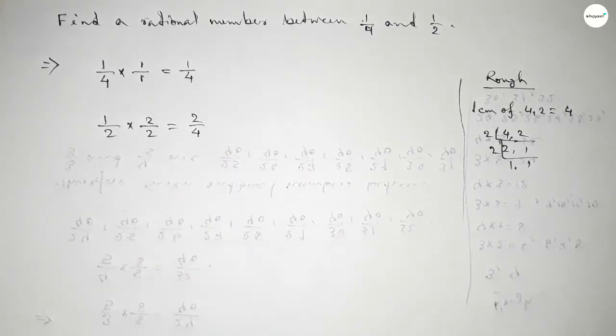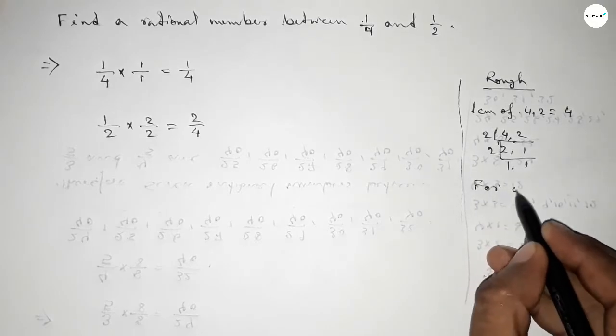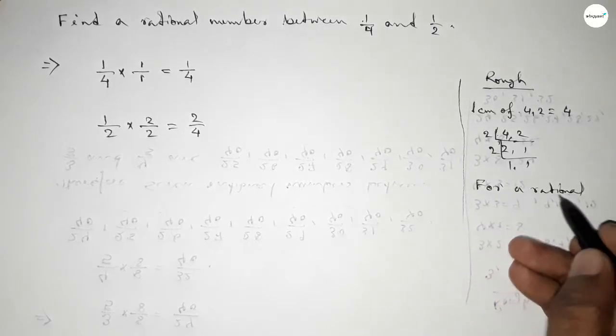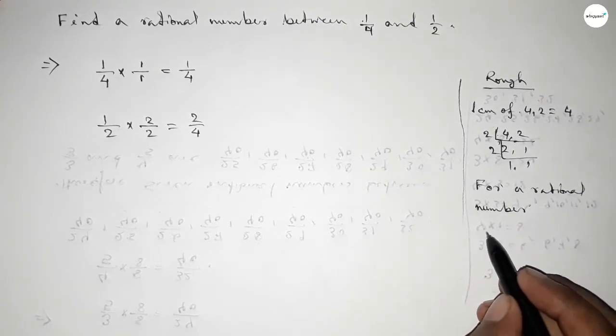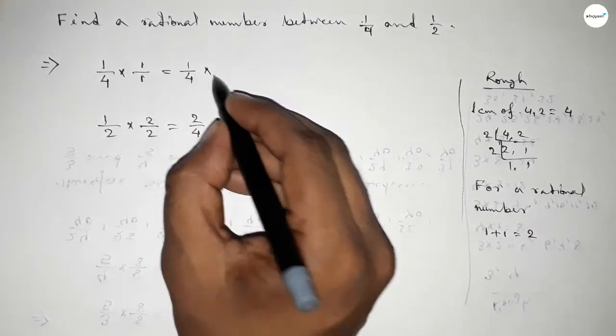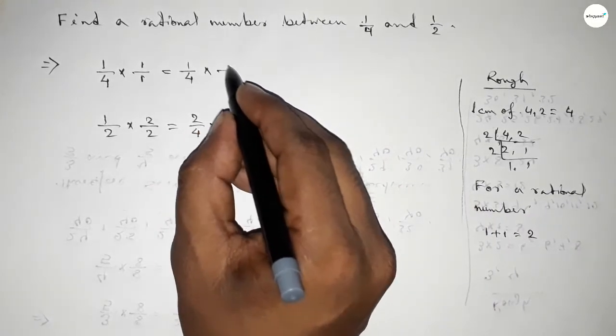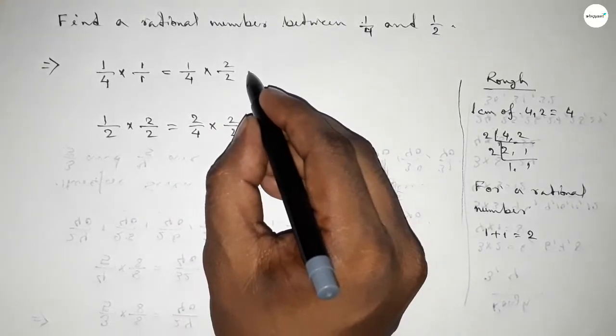Now for finding one rational number between any two numbers, we have to follow a method. We should multiply both numbers by 1 plus 1 equals 2, up and down by this way. So this is 2 over 8 and this is 4 over 8.